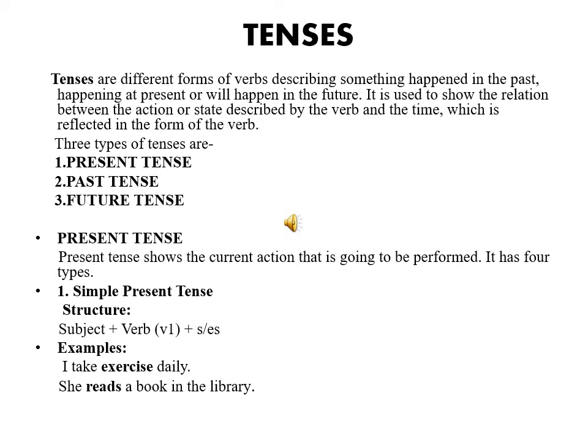First of all, we will see its definition. Tenses are different forms of verbs describing something happened in the past, happening at present, or will happen in future. It is used to show the relation between the action or state described by the verb and the time which is reflected in the form of verb. There are three types of tenses: first is present tense, past tense, and third is future tense.